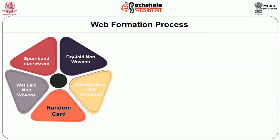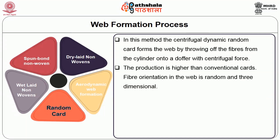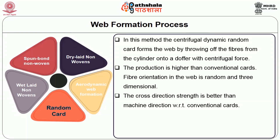The next technique is the random card, also called centrifugal dynamic web formation. In this method, the centrifugal dynamic random card forms the web by throwing off the fibers from the cylinder onto the doffer with centrifugal force. The production is higher than conventional cards. Fiber orientation in the web is random and three-dimensional. The cross-sectional strength is better than machine direction with respect to the conventional card.